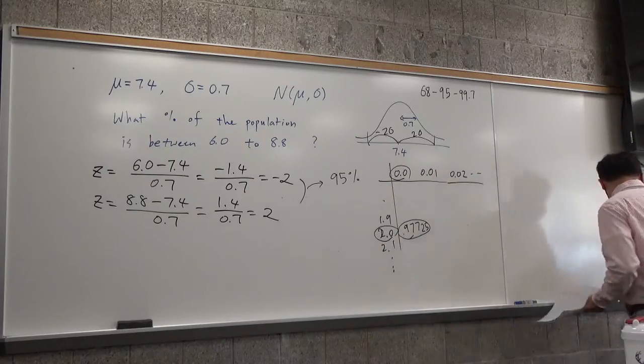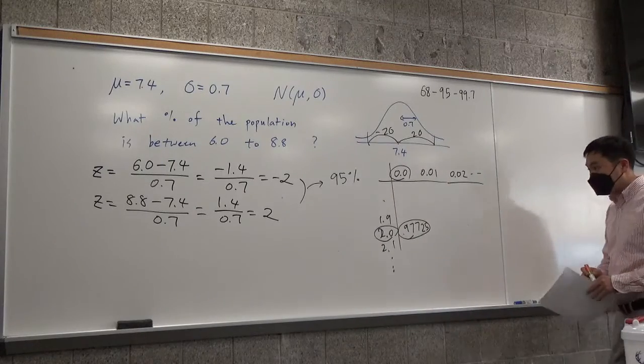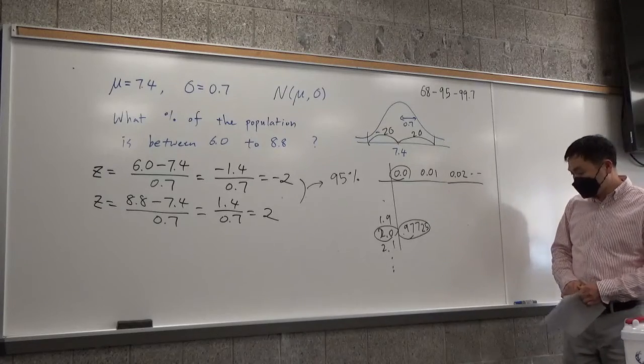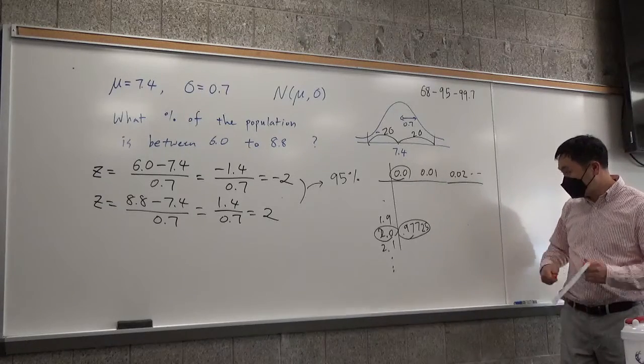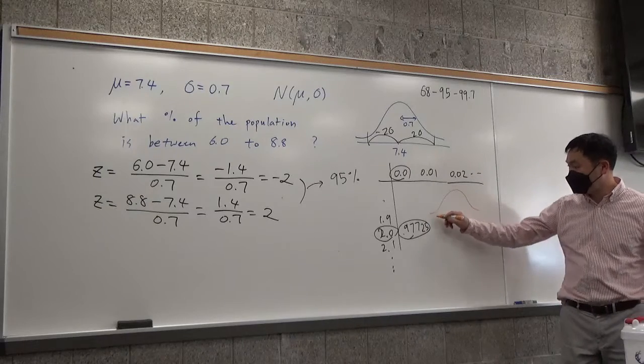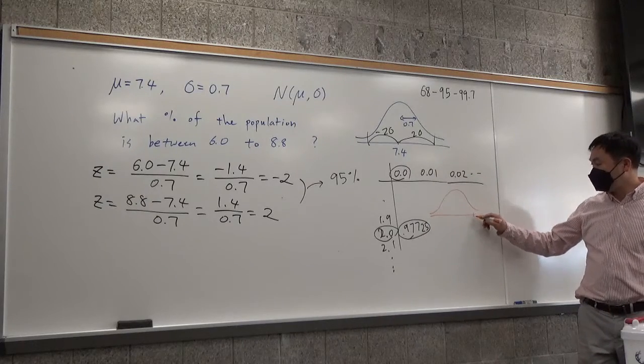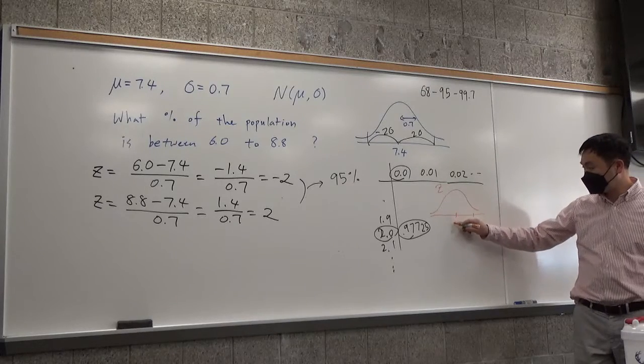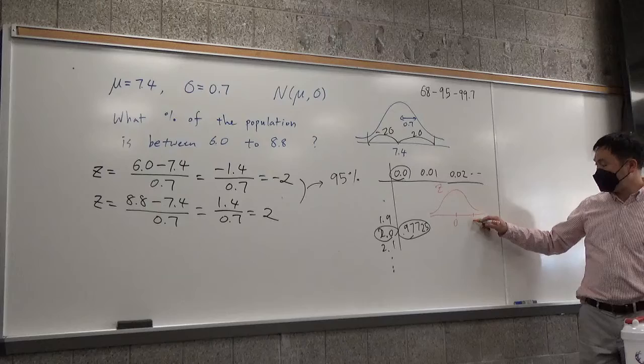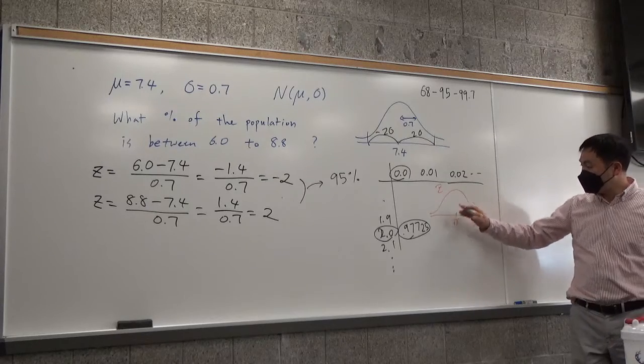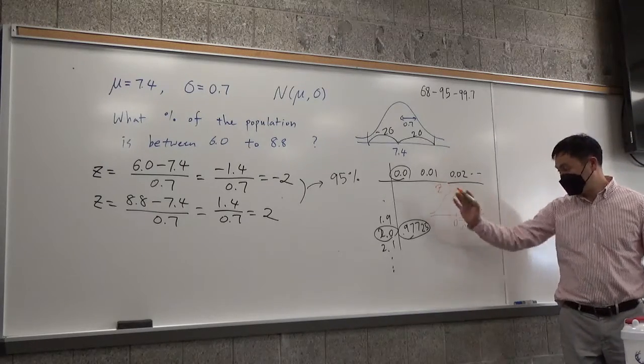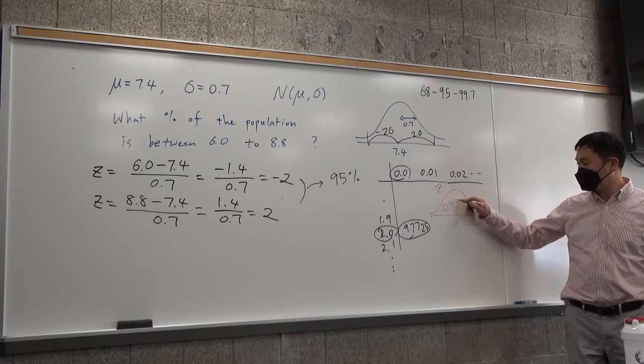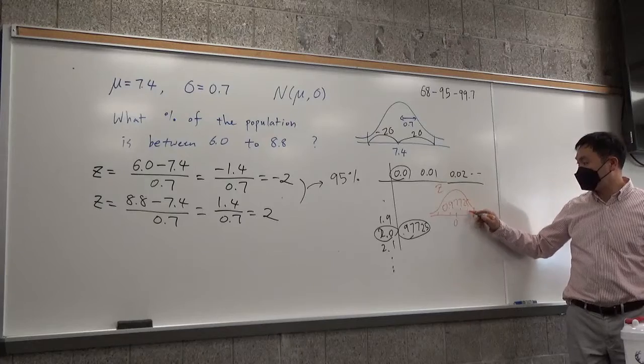Now, what does that mean? It means the following. If you have the standard normal distribution, and here is the z, the standard normal distribution, so the center is at 0. And if you go to 2, then the area before 2 is 0.97725. That's this area.